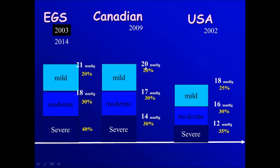The Canadian guidelines - we want a level below 20 or 20 percent reduction, while the American guidelines will go for 18 millimeters mercury or 25 percent.